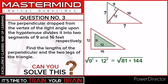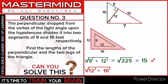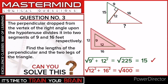That is the square root of 81 plus 144, which is the square root of 225, equals 15. For the red triangle, we have the square root of 12 squared plus 16 squared, which equals the square root of 144 plus 256, that is the square root of 400, equals 20.